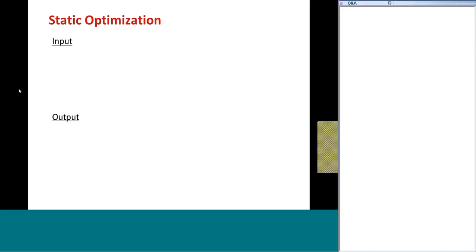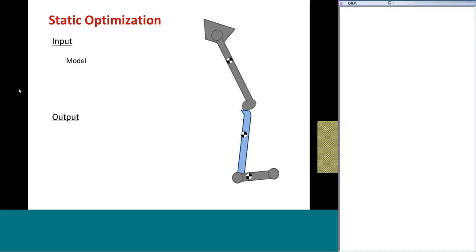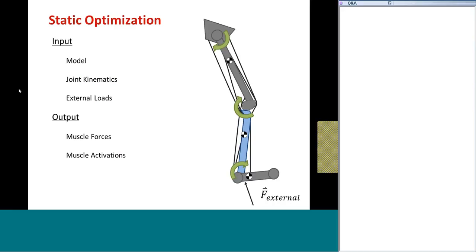Today in the demo, we'll only be focusing on static optimization to estimate muscle forces before we calculate joint loads. With static optimization, you specify a model that represents the subject geometry, provide joint kinematics that describe the motion of the model, and external loads between the feet and the floor. As output, static optimization chooses one possible distribution of muscle forces that produce the measured joint kinematics. It also uses a muscle model to estimate activations that produce these muscle forces. With that, we have a complete description of this model, its motion, and the forces that produce this motion — a full description of the system's dynamics — and we can proceed with calculating joint loads in the joint reaction analysis.